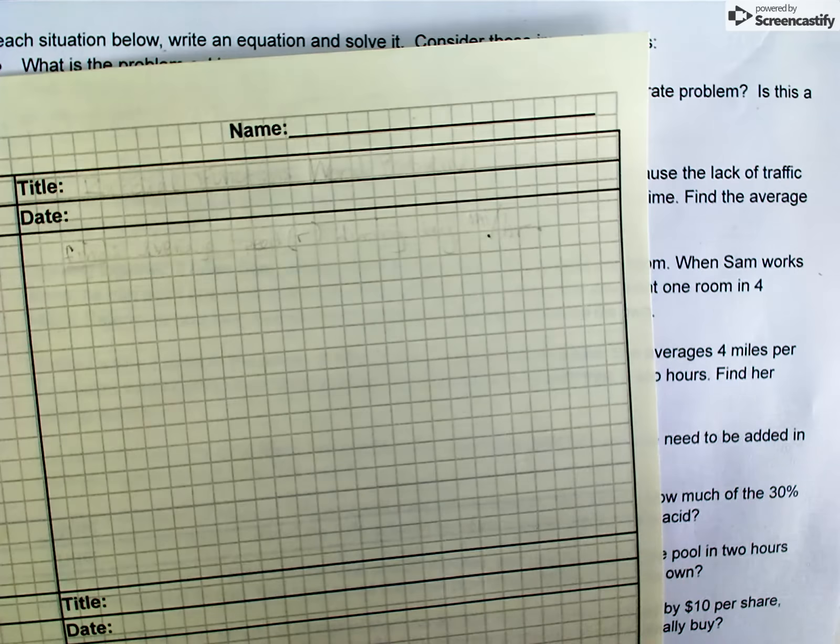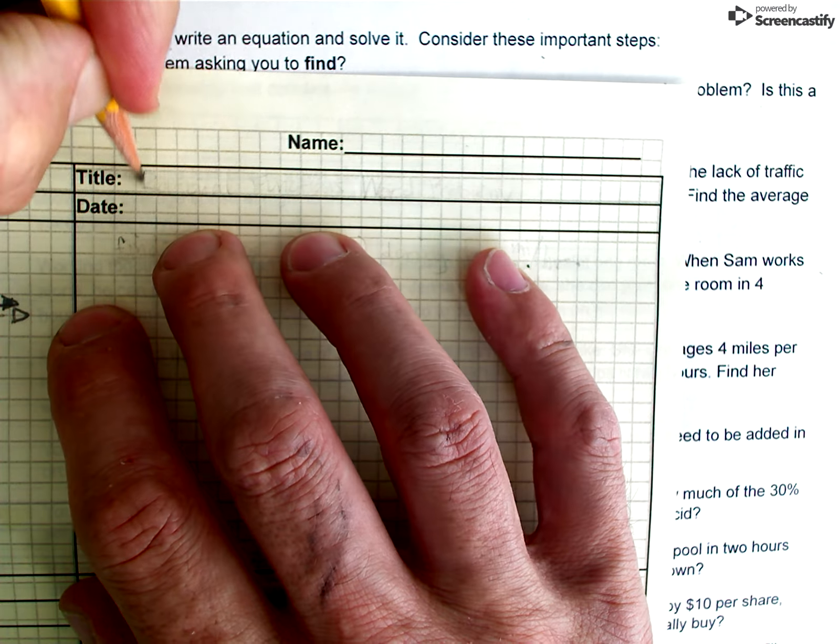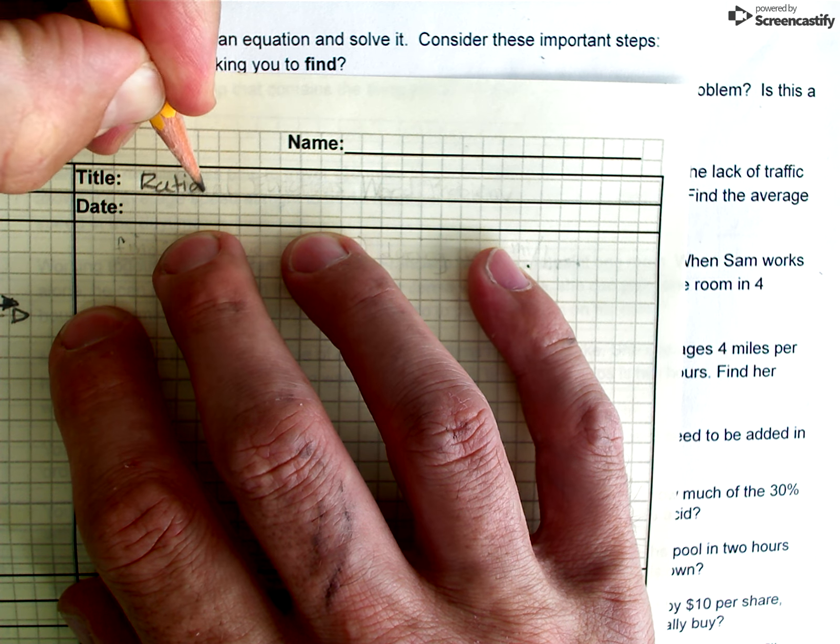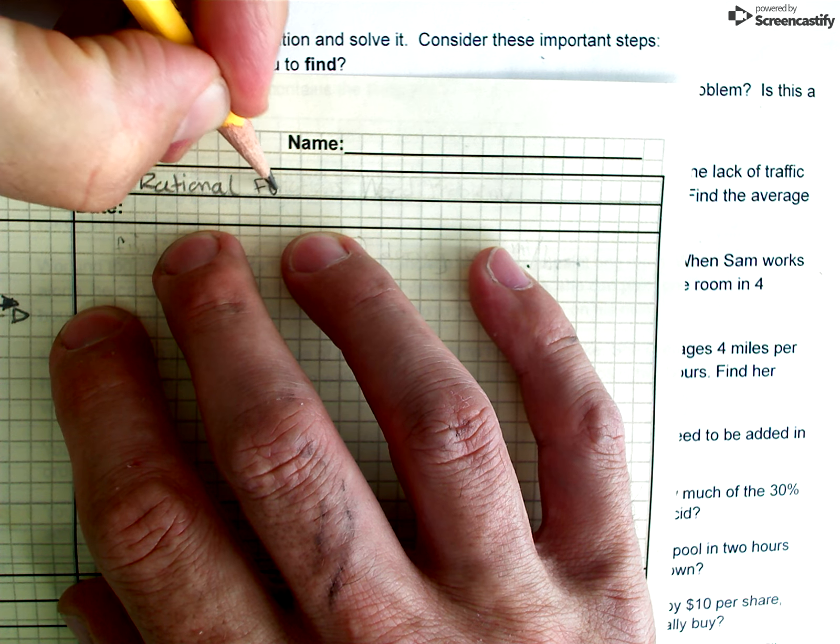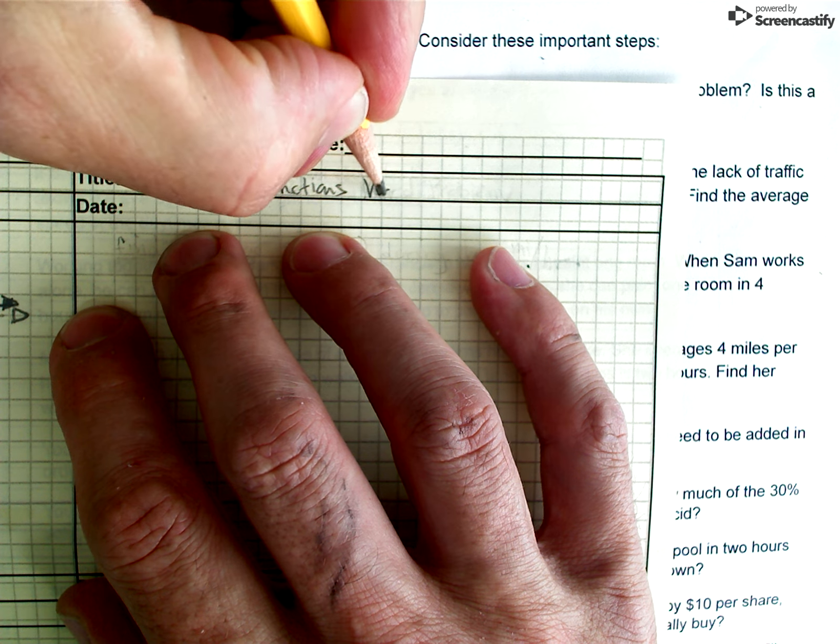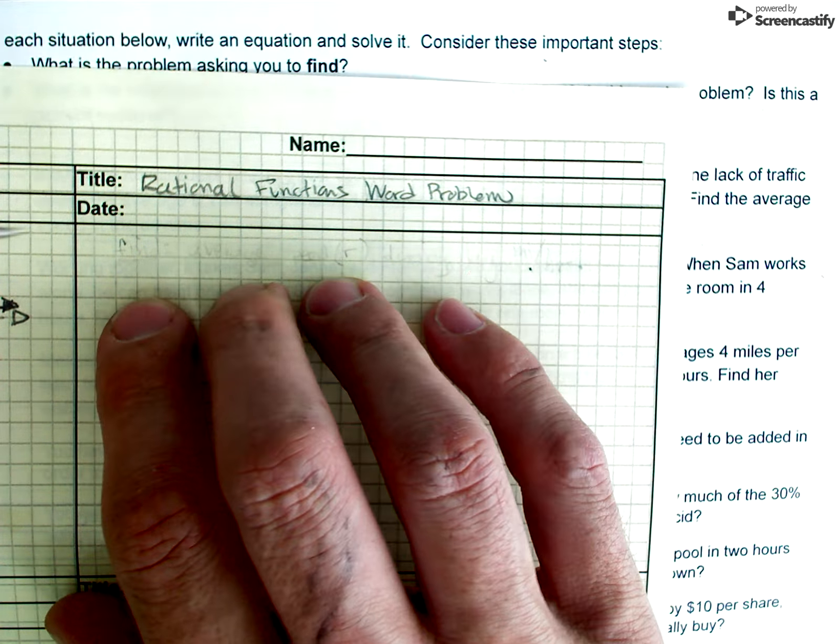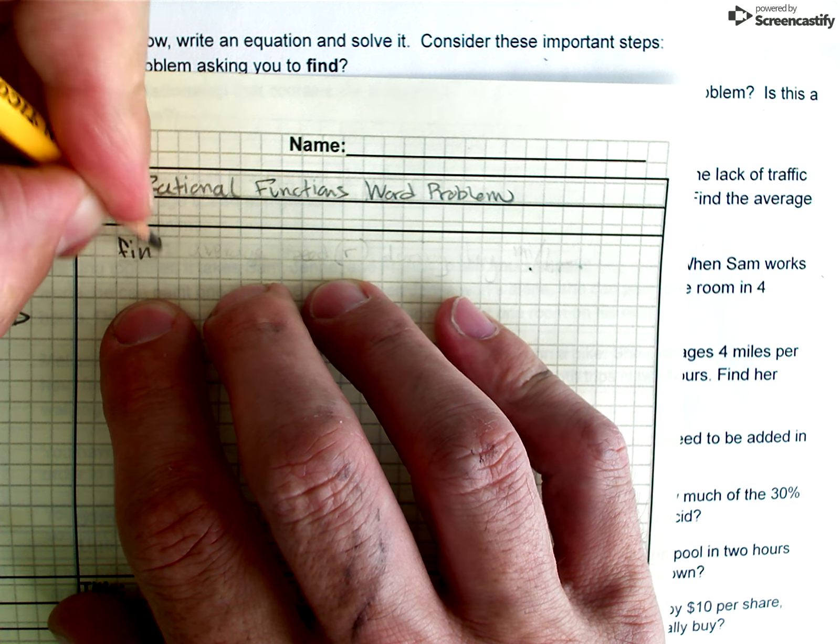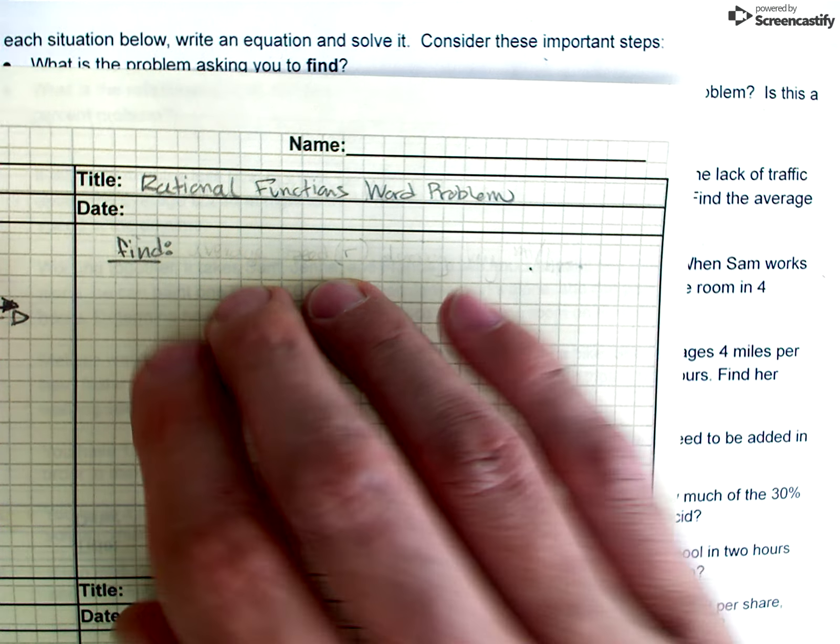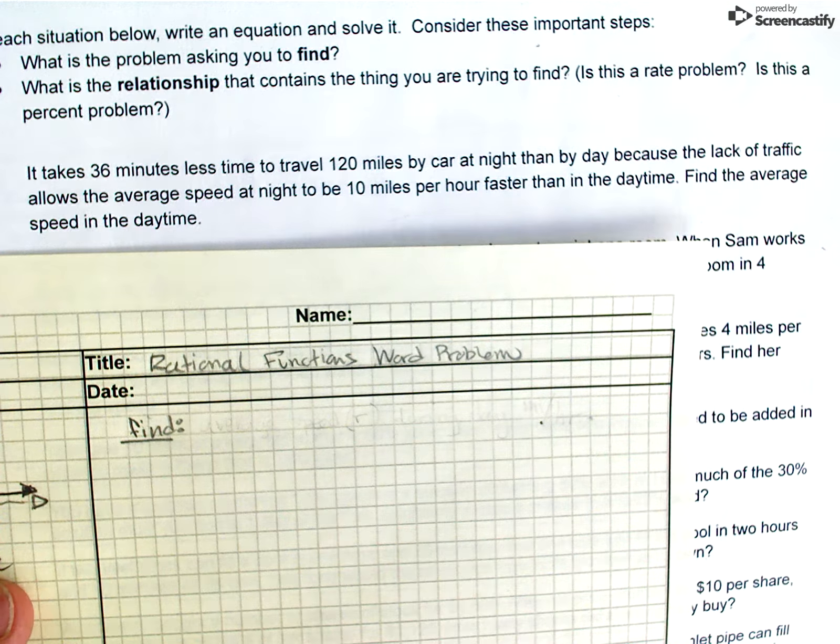So I'm going to get my problem journal here. The first thing I will do is title it rational functions word problems. That's what we're doing here. And the first thing I like to do in any kind of word problem really is just to figure out what it is that I'm looking for.